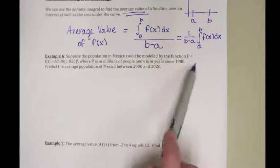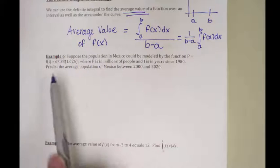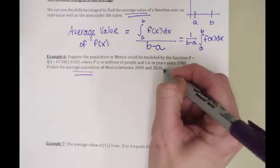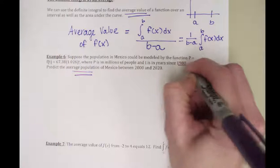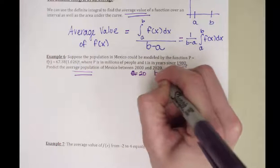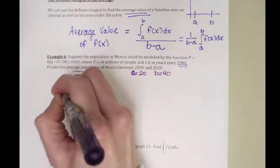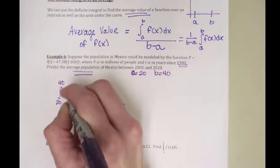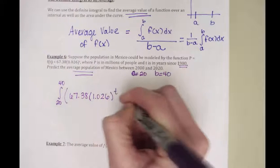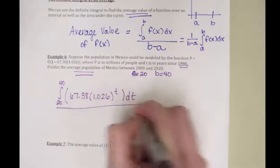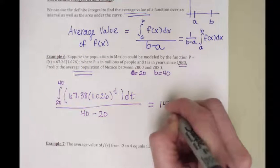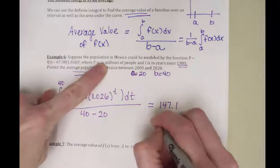We have a population equation for Mexico, and it wants us to find the average population from 2000 to 2020. The starting year is 1980, so 2000 is 20 years later — that's a — and 2020 is 40 years later — that's b. So the average value is the integral from 20 to 40 of the function dt, divided by 40 minus 20. Typing that in the calculator gives 147.1 million.